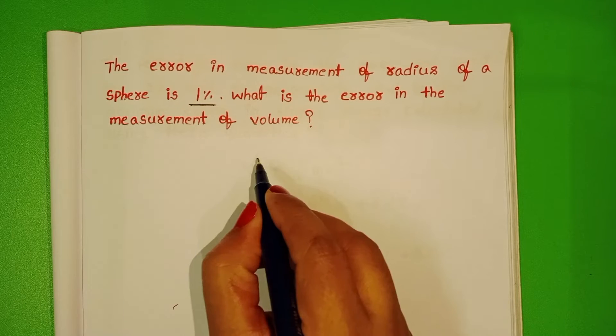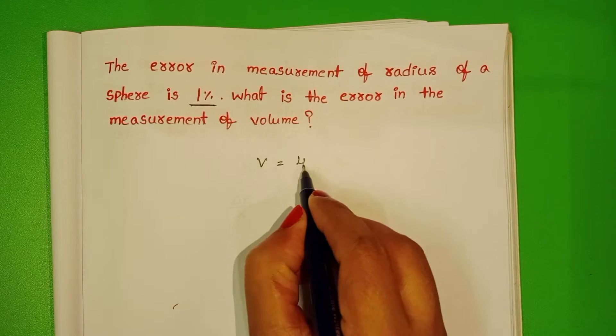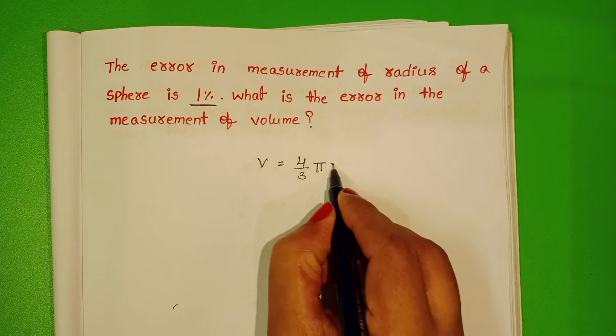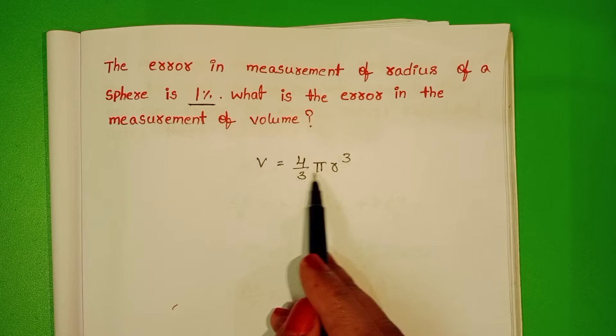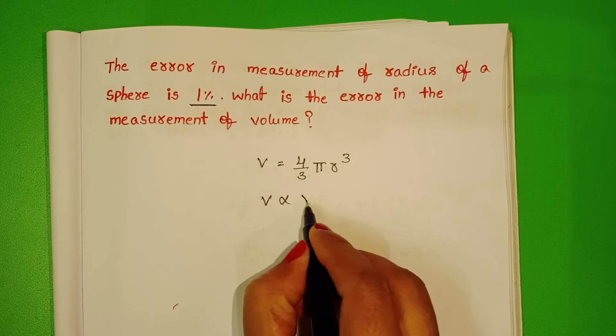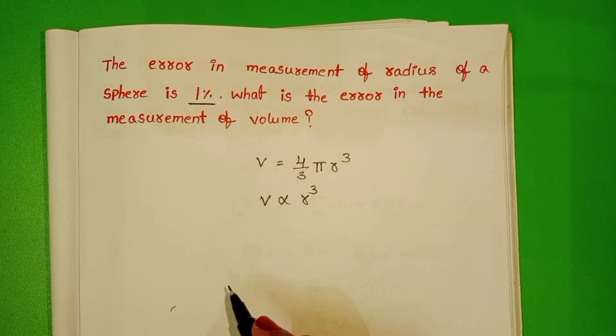We know the formula for volume of a sphere is V = 4/3 π r³. Here 4/3 π is constant, so volume is directly proportional to the cube of the radius.